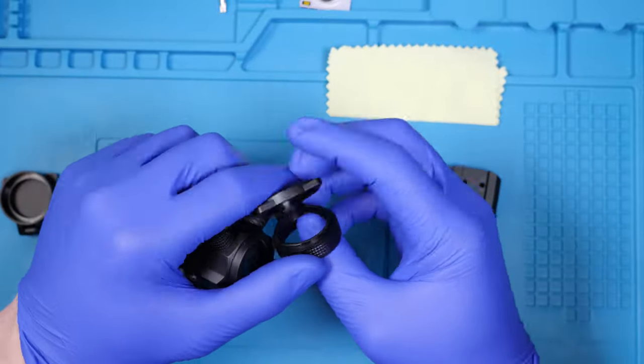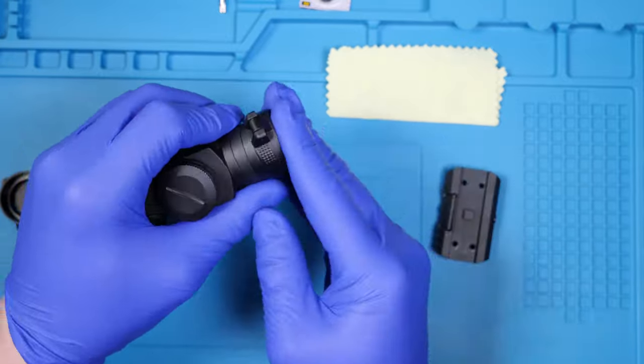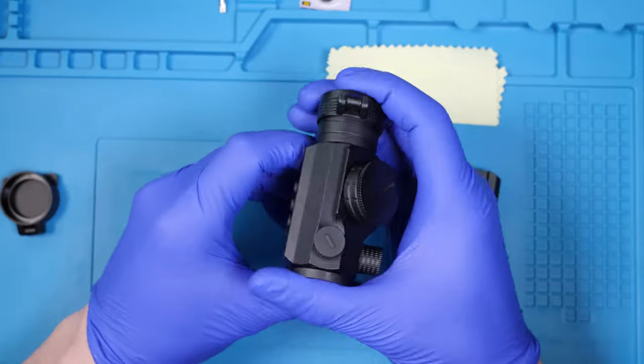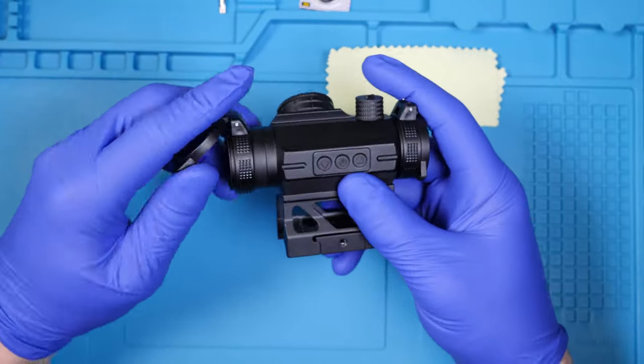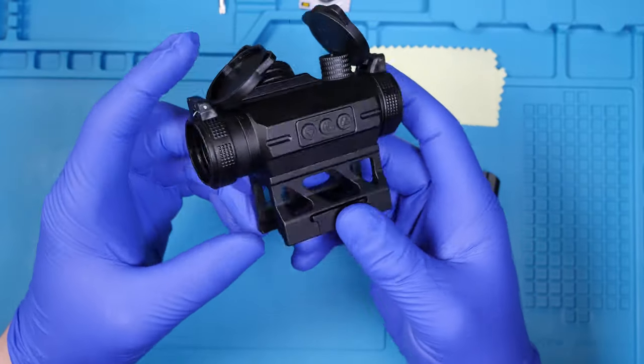Looking at the flip up lens covers, they are a durable plastic that snap on and off as needed. The lenses can then flip up and down depending on when it's in use.